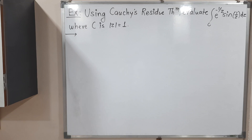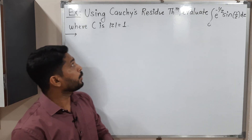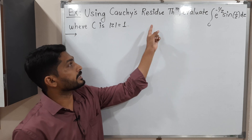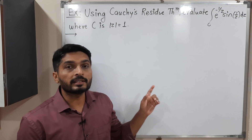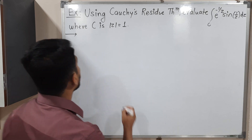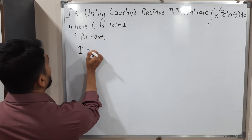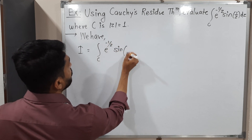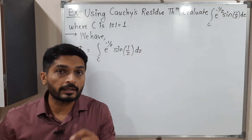In this video we are going to discuss this example. We have a complex integration we have to solve it over this curve C, with the help of Cauchy's residue theorem. First I will call the given integral as I. We have the integral 2 minus 1 by z sine 1 by z dz — that is e^(-1/z) sin(1/z) dz.